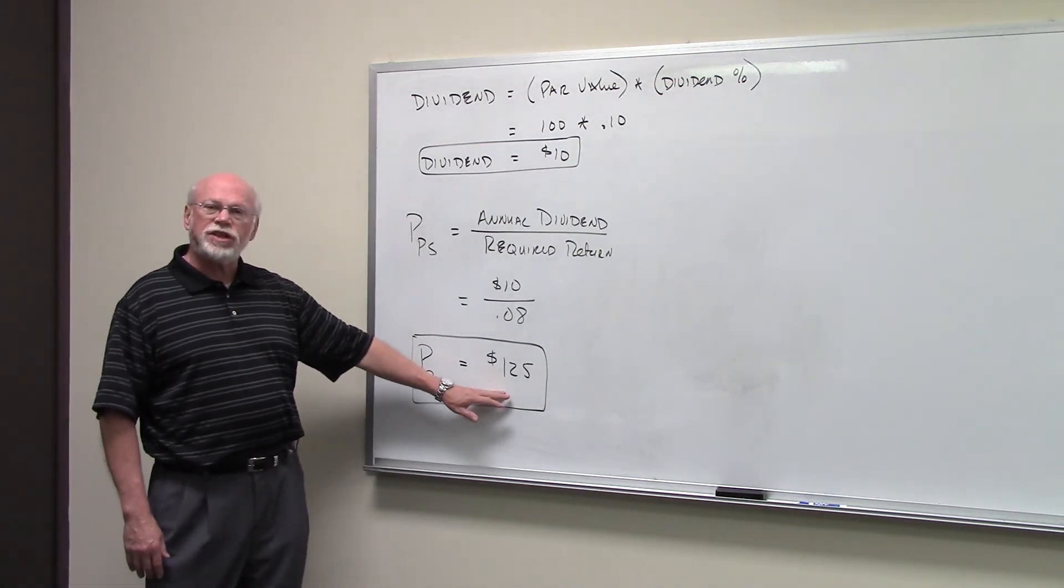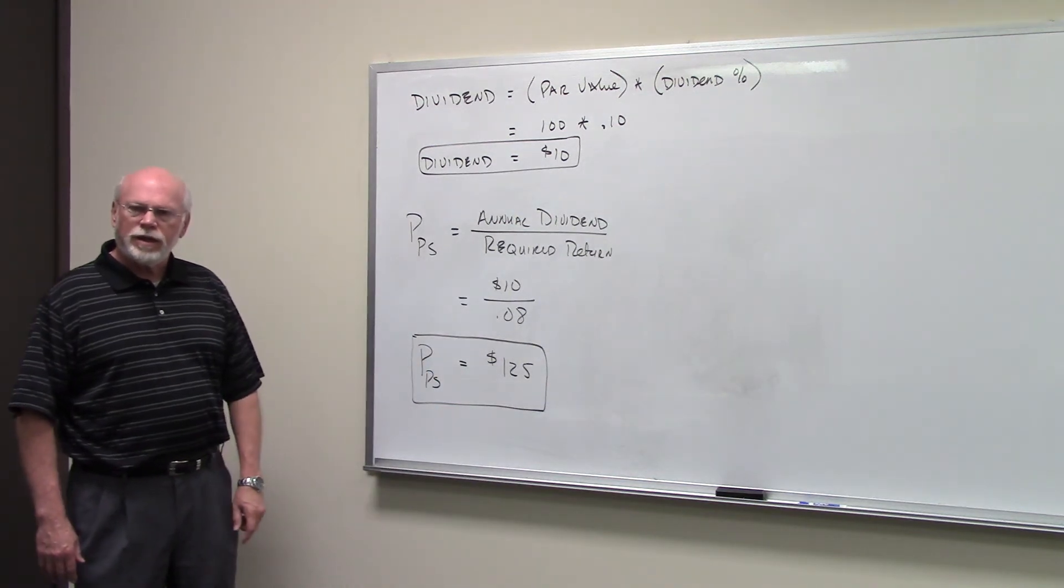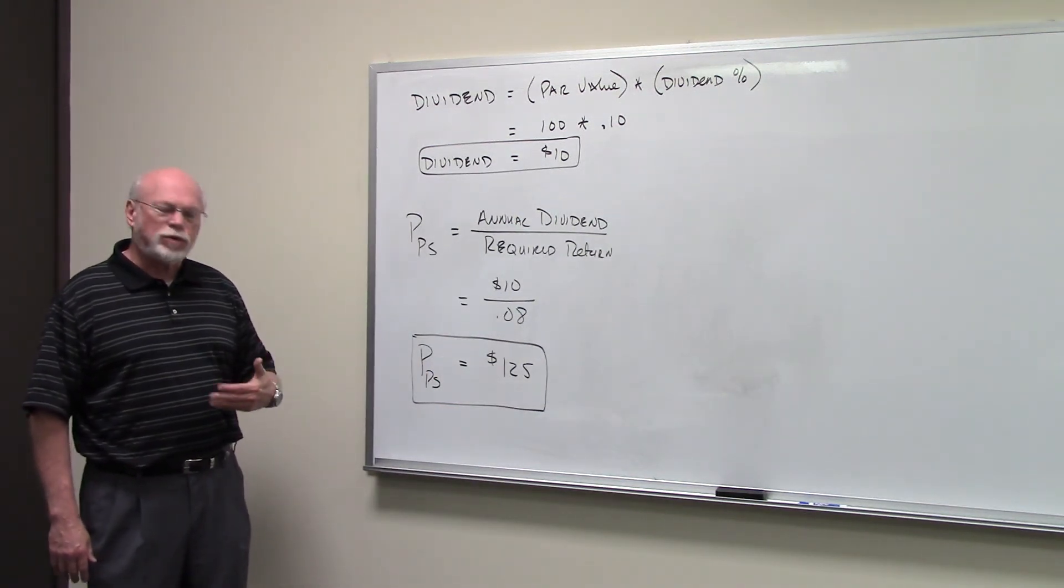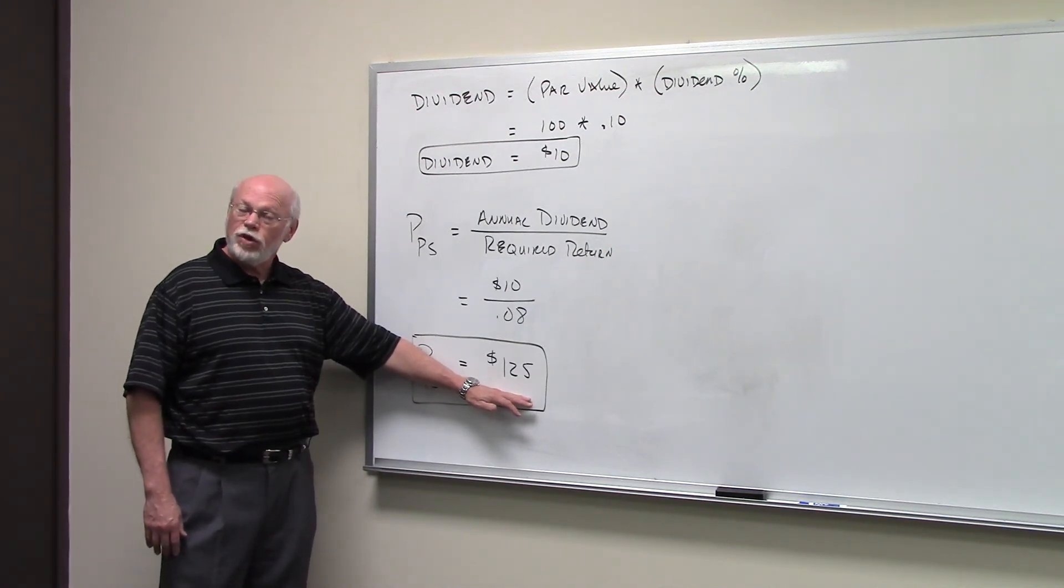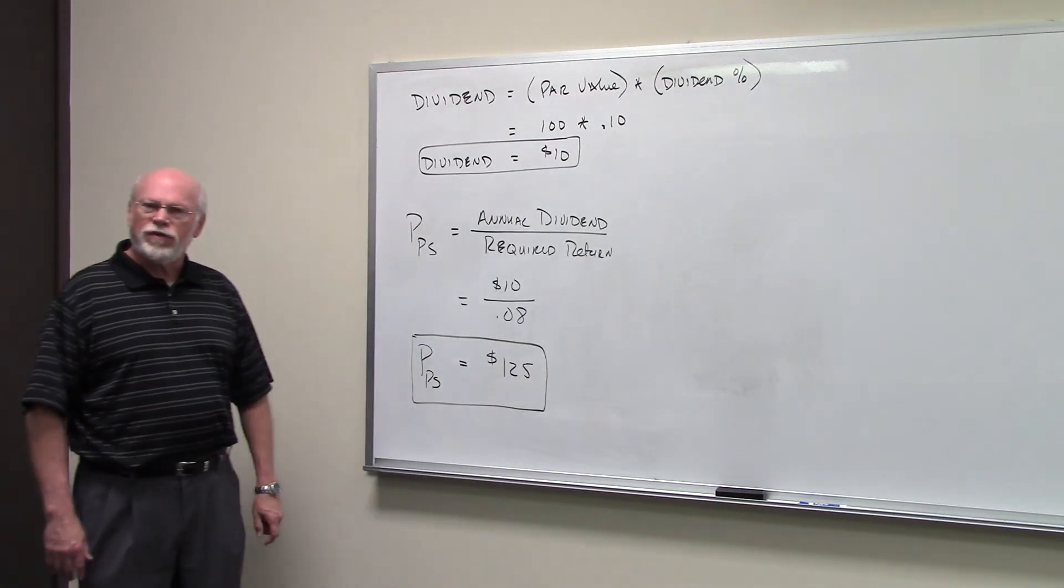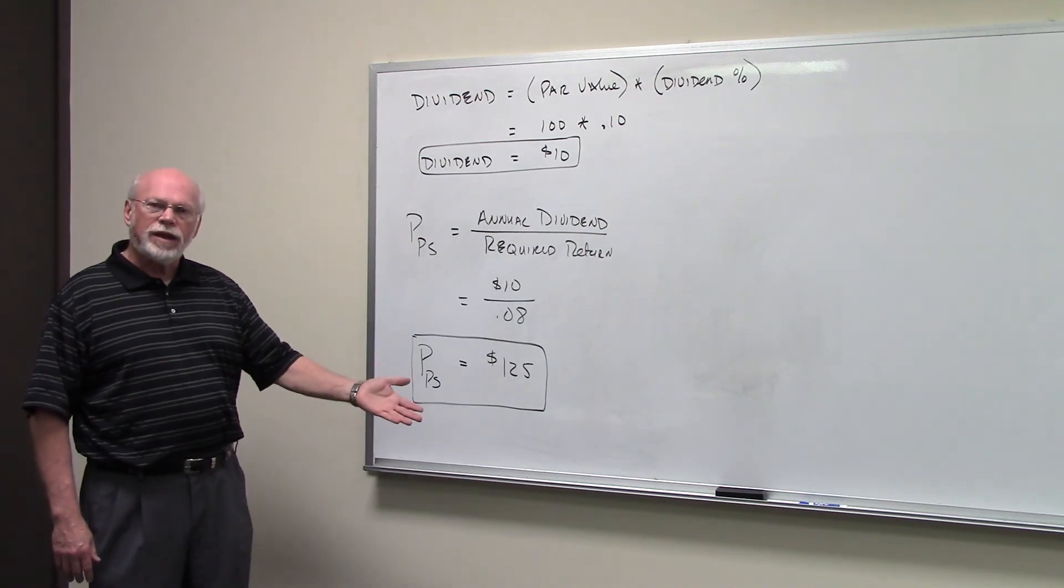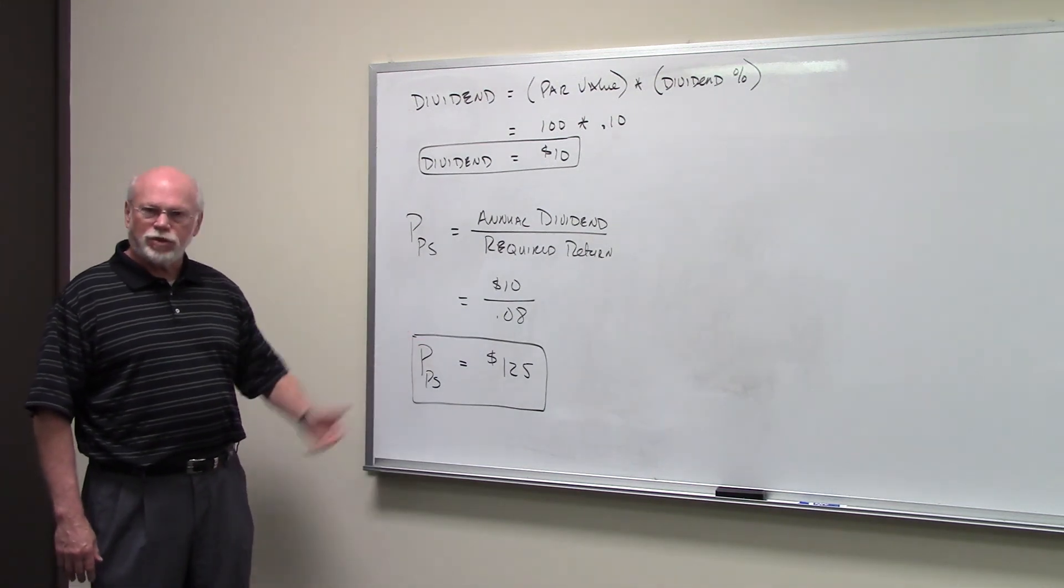This is the intrinsic value of the preferred stock. So if you required a return of 8%, you wouldn't pay more than $125 a share. If you could buy the stock for less than $125 a share, you'd do that because then you'd get a return greater than 8%.